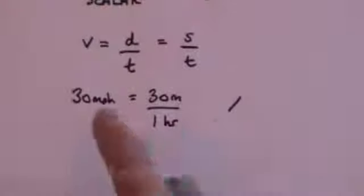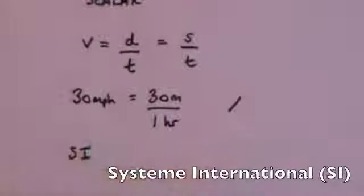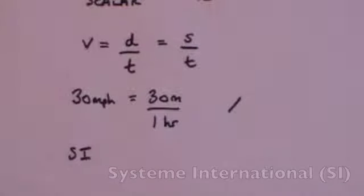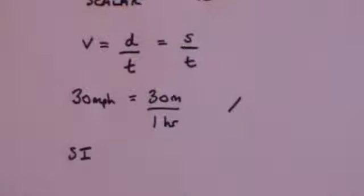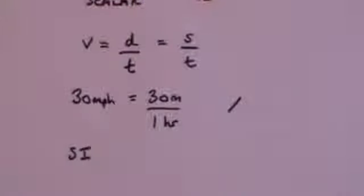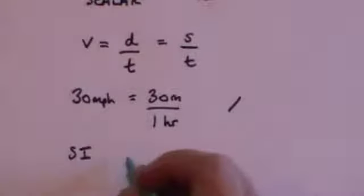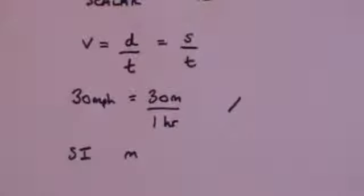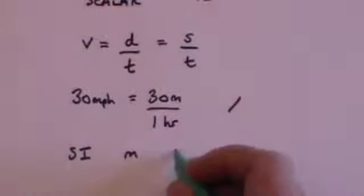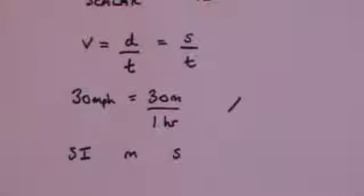Now, we use what is called the Système Internationale form of units. This means we always use the same units so we never get the wrong values from mixing different units — you can't mix miles and kilometres. So we use a standard called the Système Internationale, the standard form of measurements. For our purposes, distances are measured in metres, time is measured in seconds, and masses are measured in kilograms. There are other units, but these will do us for the time being.